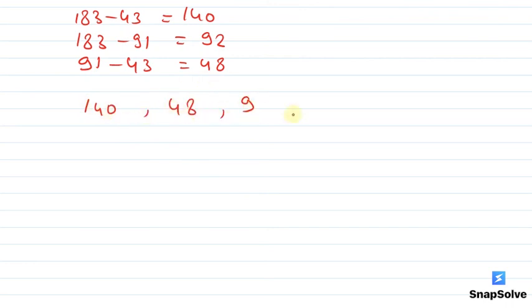Now find the HCF of 140, 48, and 92. When we calculate the HCF using prime factorization method, we get 4.